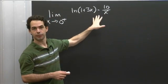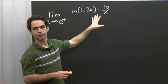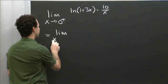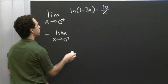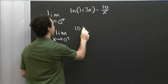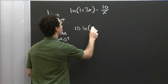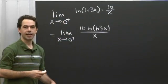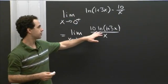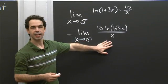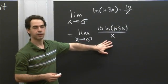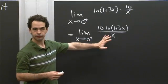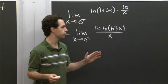There's an obvious way to rewrite this as an indeterminate quotient: the limit as x goes to 0+ of 10 ln(1 plus 3x) divided by x. Now this is a limit of the form 0 over 0, so we can apply L'Hôpital's rule.